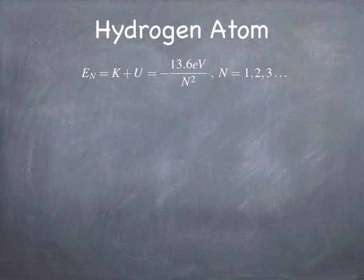The first example is the hydrogen atom — an electron and a proton bound together. Because they're bound, the total kinetic and potential energy of the system can only take on values given by this formula. The energy of the n-th allowed state is minus 13.6 electron volts divided by n squared, where n is one of the natural numbers starting at 1, then 2, then 3, and so on.